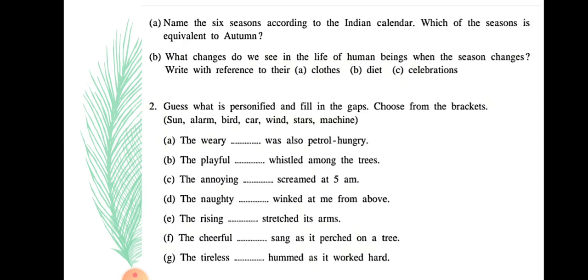Name the six seasons according to the Indian calendar. Which of the seasons is equivalent to autumn? Vasant is spring season, Grishma is summer season, Varsha is monsoon season, Sharad is autumn season, Hemanta is fall of leaves, and Shishira is winter season. The season Sharad is equivalent to autumn season.